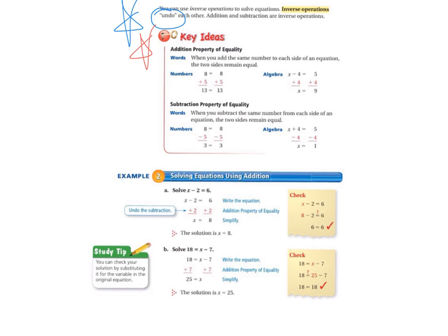Addition property of equality. When you add the same number to each side of an equation, the two sides remain equal. So an example of that is 8 equals 8. And if you add 5 to both sides, you get 13 equals 13. And there's an example with algebra, x minus 4 equals 5. If you add 4 to each side, you have x equals 9 because the 4s cancel each other out because you have a negative 4 plus a positive 4 and 5 plus 4 equals 9.